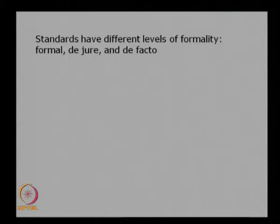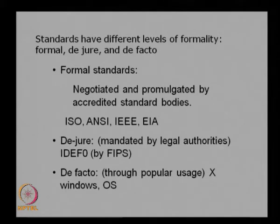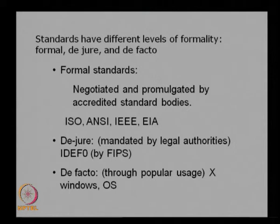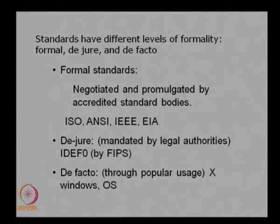Following standards for interfaces actually helps the system designer have a better system with low cost, low risk, and a better life cycle. Standards are classified into three categories: formal standards, de jure standards, and de facto standards. Formal standards are those formally accepted by accredited standard bodies like ISO, ANSI, IEEE, and EIA. These are negotiated and promulgated by these bodies, and if manufacturers follow them, we can ensure that whatever the system design, the interface follows these standards — ensuring interchangeability and interoperability.